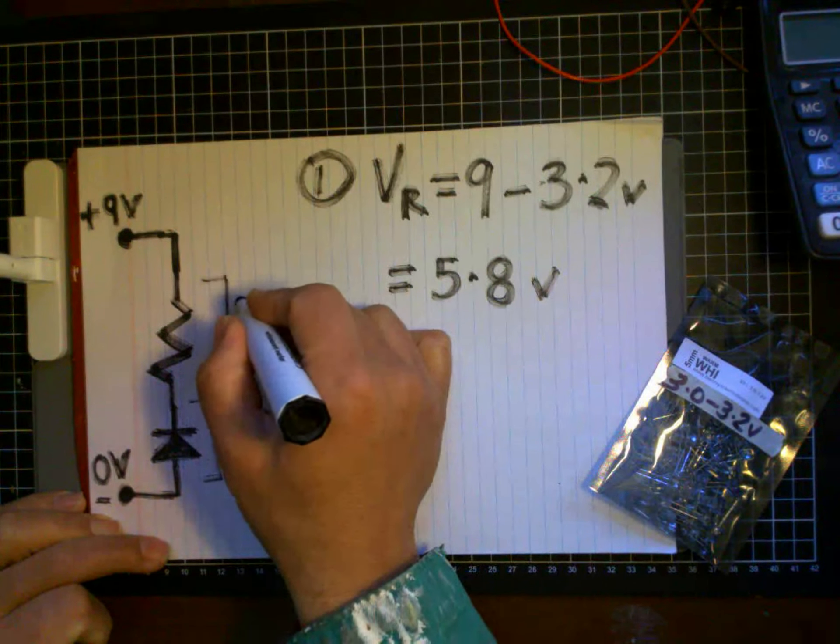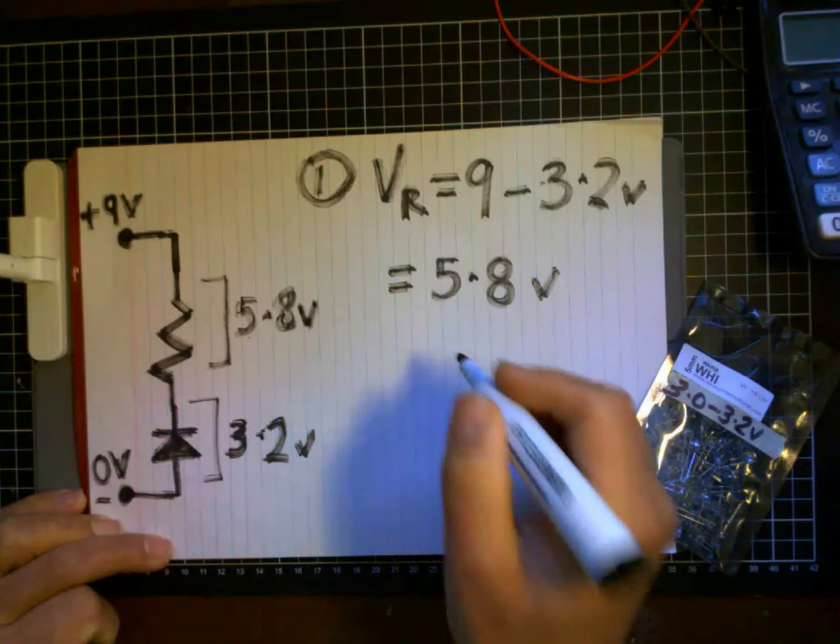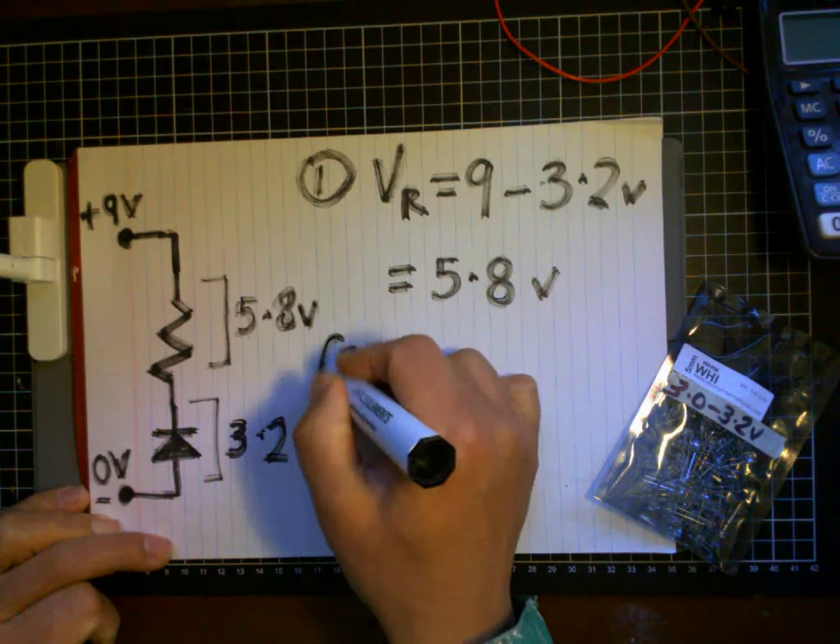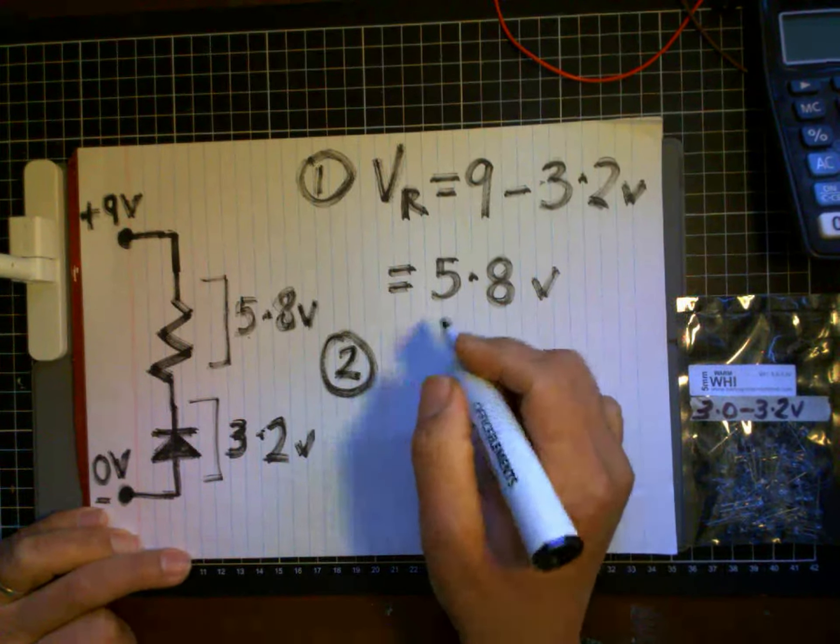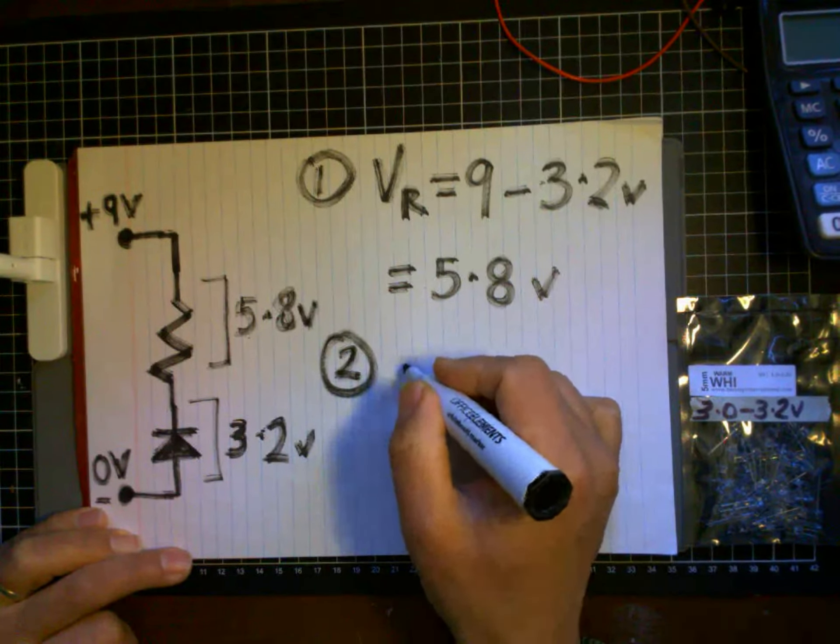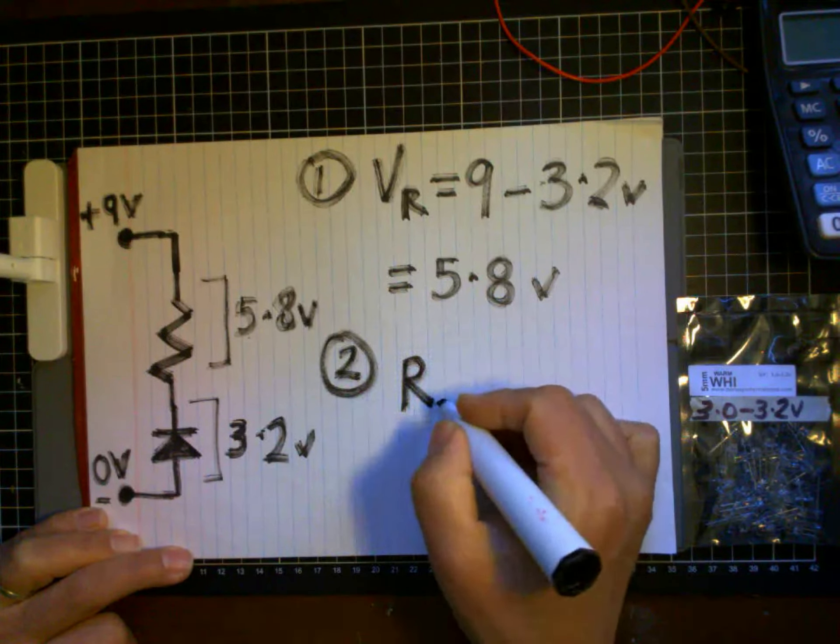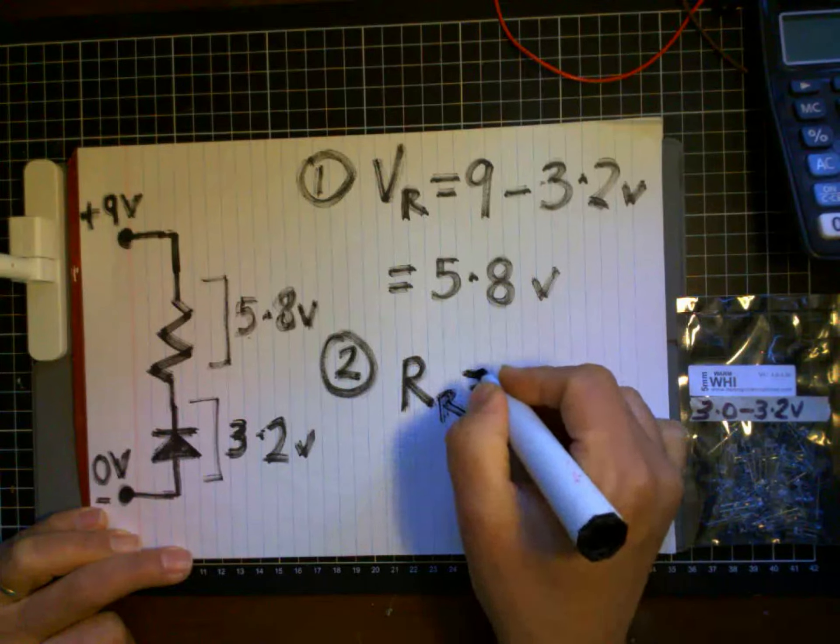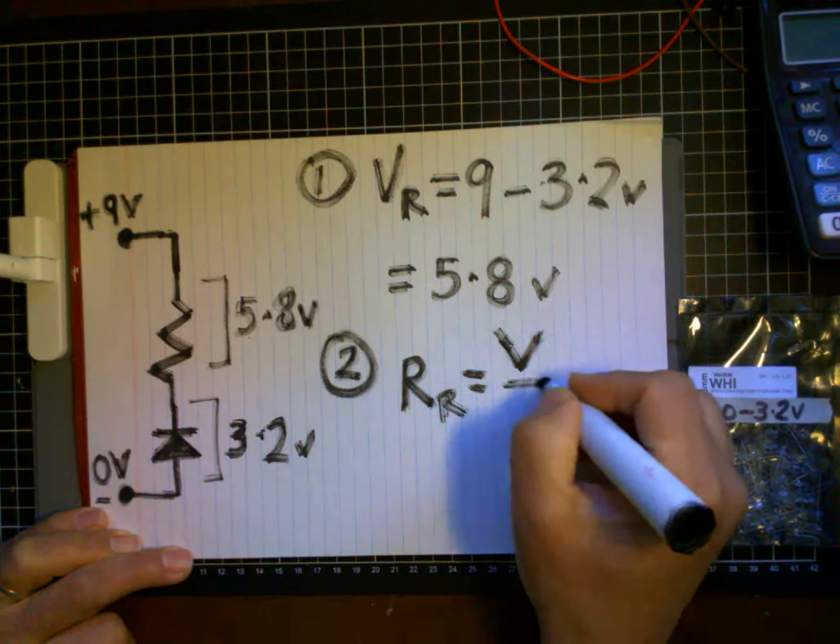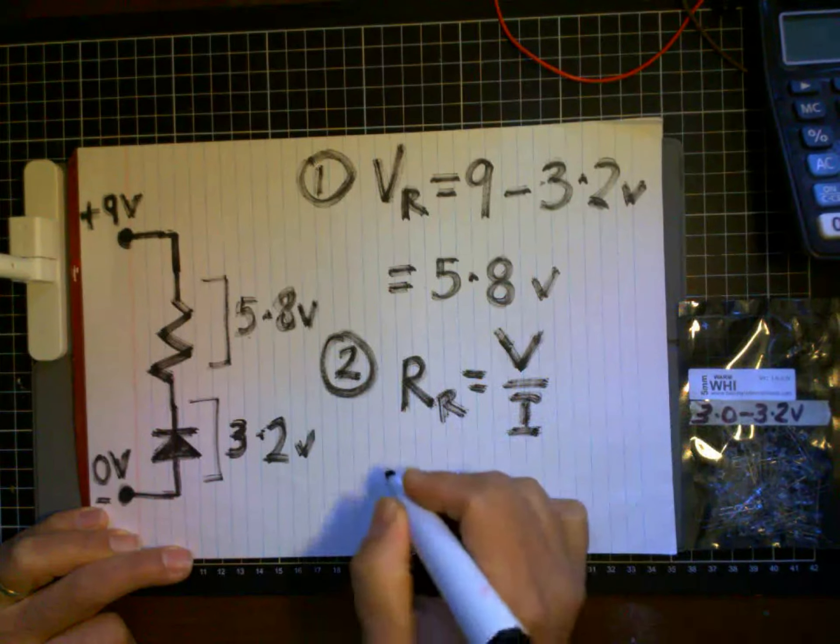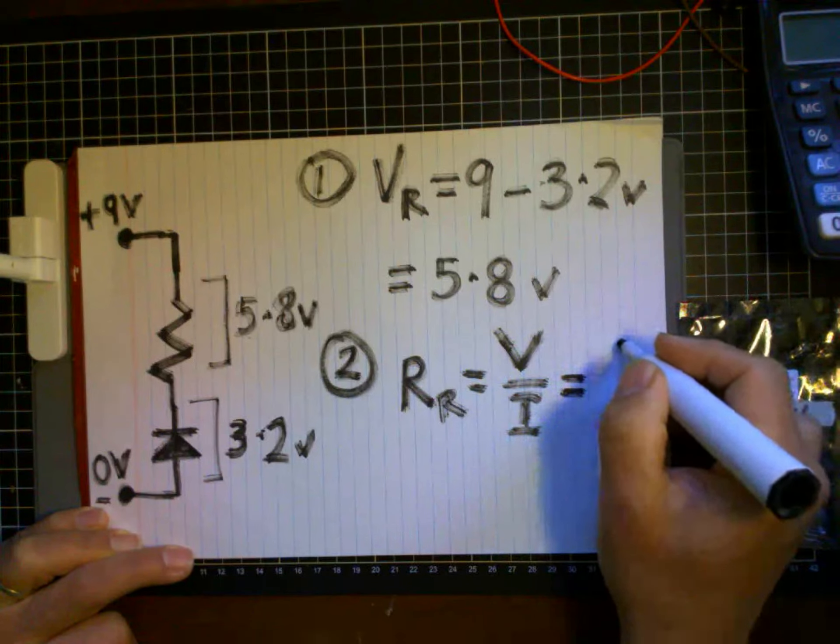And that's the resistor voltage used here. To work out the resistance of this resistor, we just do the second part of the calculation: work out the resistance. I use Ohm's law again, and R for the resistor, the resistance of the resistor, is going to be using this formula here, V over I, which is 5.8...